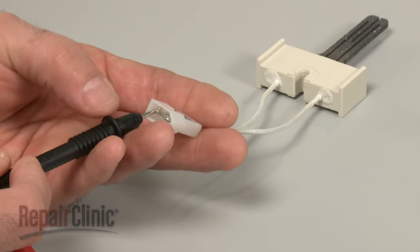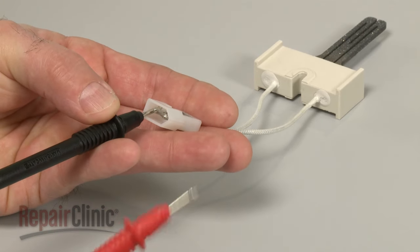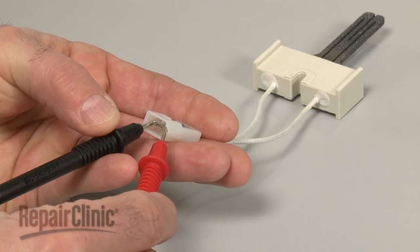Use a probe to touch one of the igniter's terminals, and the second probe to touch the other terminal.